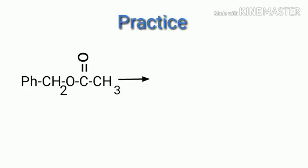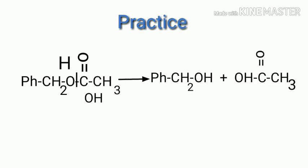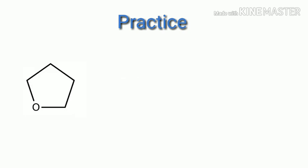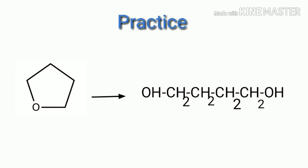Now we will practice some questions. In every compound we get carbon-oxygen and oxygen-hydrogen bonds. For a cyclic compound, the procedure is the same: carbon-oxygen bond opens, and finally we get a straight chain compound such as HO-CH₂-CH₂-CH₂-CH₂-OH. The trick in hydrolysis is to identify and break the correct bonds.